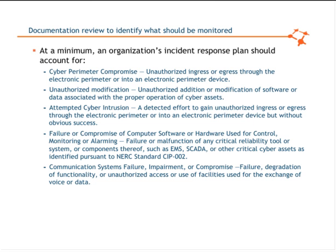Pointedly, if we were to use the NERC guidance document as a basis, it should discuss certain types of events that will need to be potentially escalated to the ES-ISAC or DOE through an OE-417 reporting document. They include things such as cyber perimeter compromise, unauthorized modification of software or data, an attempted cyber intrusion, or a failure or compromise with computer software or hardware used for control, monitoring, or alarming. Those are the things we look for inside a plan — something that feeds into it so you can then escalate throughout your organization to determine if there truly is an incident or not.